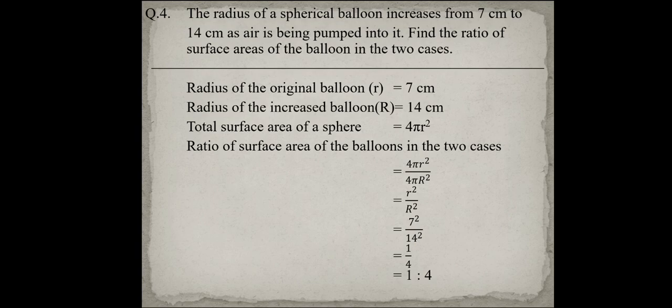14 is cut by 7, giving 1 upon 2, and squaring 1 upon 2 gives 1 upon 4. So the ratio is 1 is to 4. The ratio of surface area of the balloon in the two cases is 1:4.